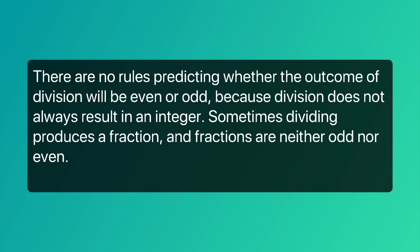There are no rules predicting whether the outcome of division will be even or odd, because division does not always result in an integer. Sometimes dividing produces a fraction, and fractions are neither odd nor even.